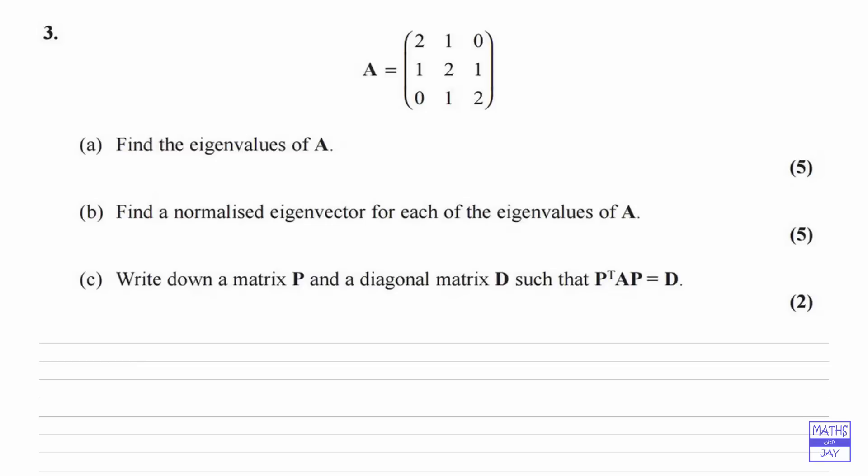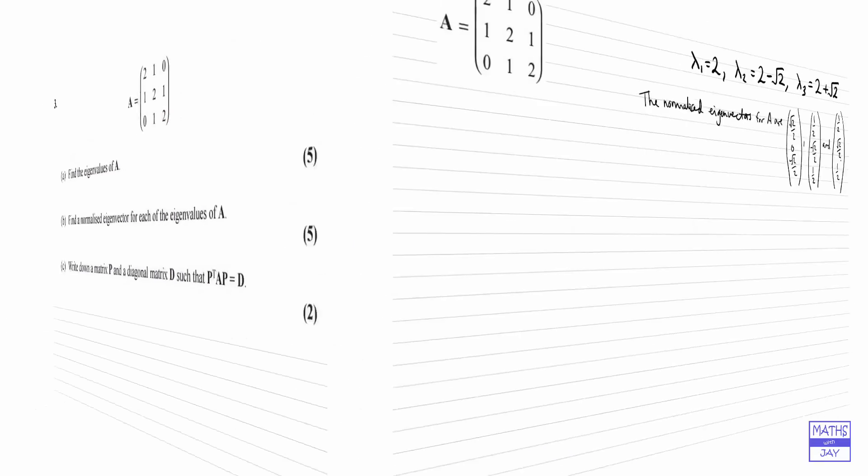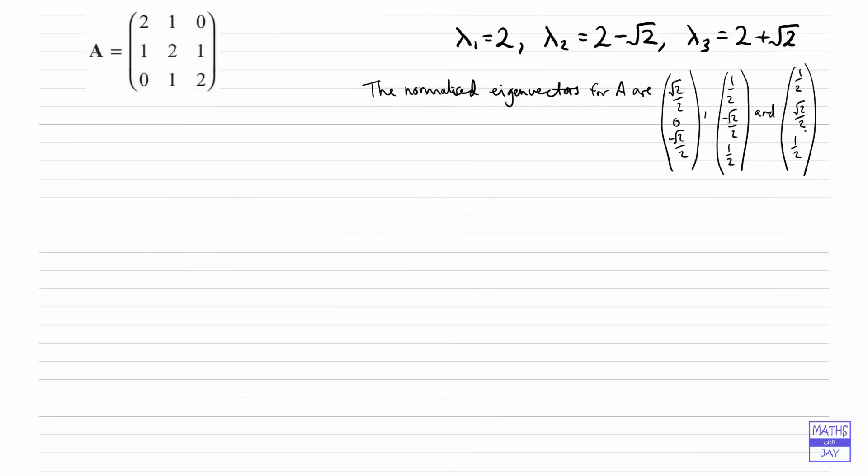So let's remind ourselves of our answers to parts A and B. In part A we found the eigenvalues shown as lambda 1, lambda 2 and lambda 3, and then in part B we found the normalised eigenvectors which I've written in the same order as I've written the eigenvalues.